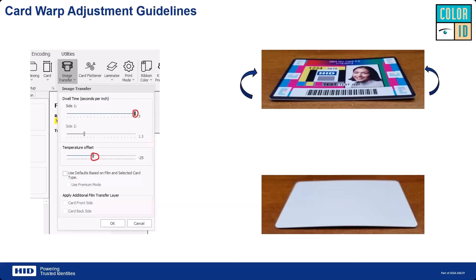There are several options to reduce card warp and jamming. Changing the print job's image transfer temperature and dwell time will help. Typically, we want to decrease the temperature and potentially increase the dwell time — reducing the heat going into the card while having it spend more time under the transfer rollers. It really is just about the temperature and how much heat you're putting into the system.